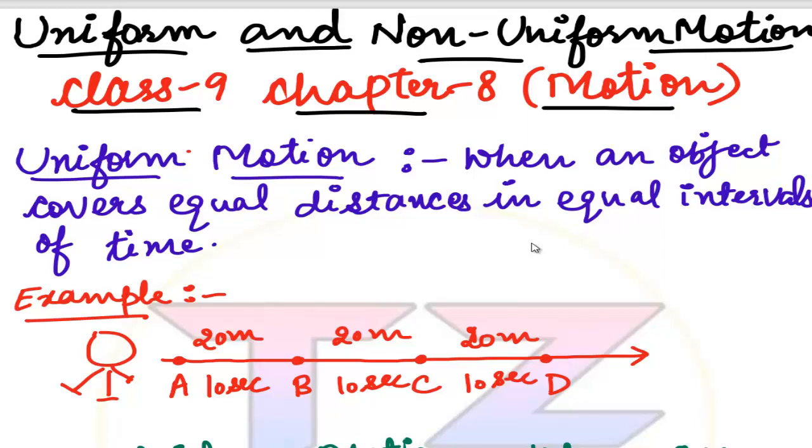Uniform Motion - when an object covers equal distance in equal intervals of time, then it is known as Uniform Motion. This means that when any object covers equal distance and the time interval gap is equal, then we call it Uniform Motion.